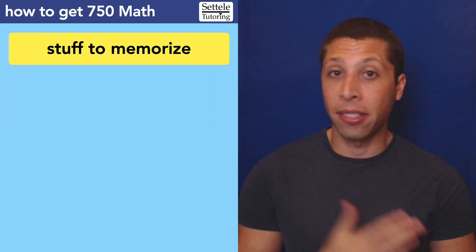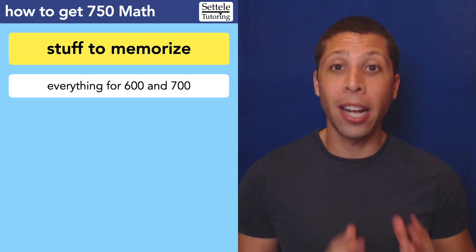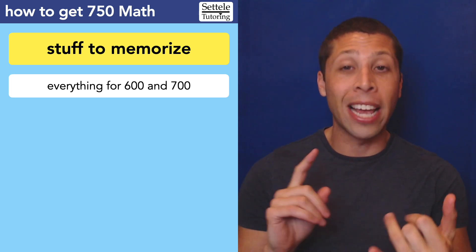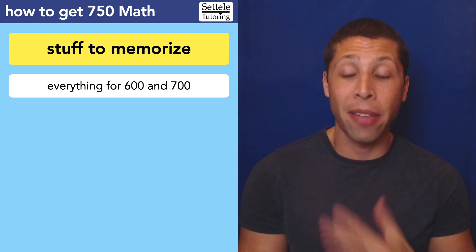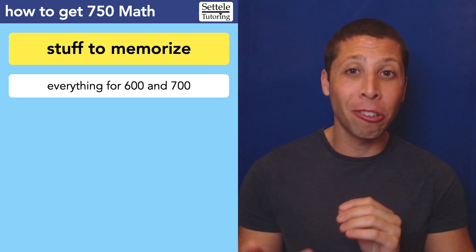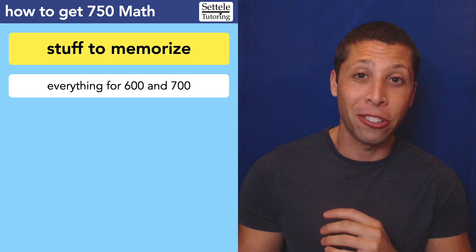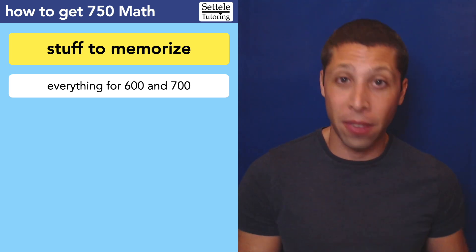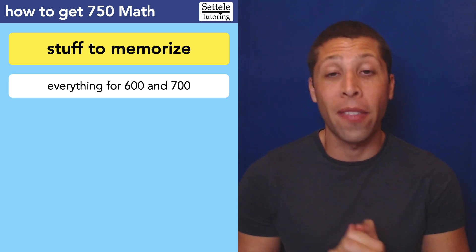So first, let's go with things to memorize. This goes without saying, but everything I talk about in the lessons on getting a 600 in math and a 700 in math, you need to have all of that perfectly memorized. So if you're not that great at algebra or you're still forgetting what the different quadratic equations look like, you are not going to get a 750. You cannot have any hesitation on that stuff.